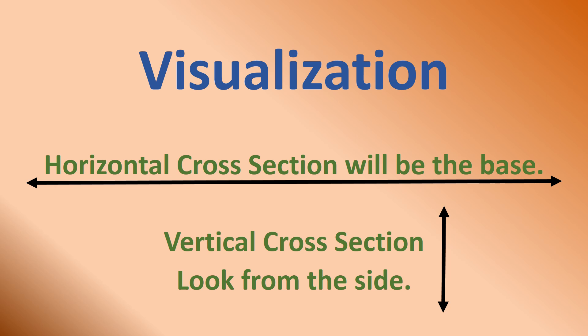Remember when you do a horizontal cross section, you'll get the base. Just think about what the base is and you should have it. Vertical is much more difficult. You need to look at it from the side. You need to think about the three-dimensional shape as two-dimensional and visualize it that way. That should help you.